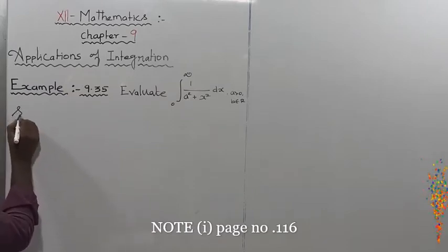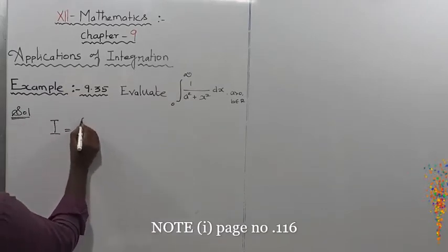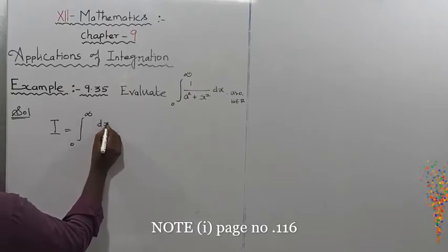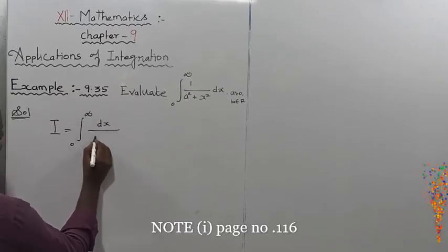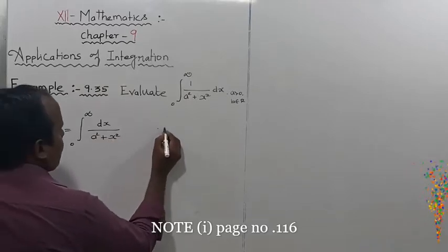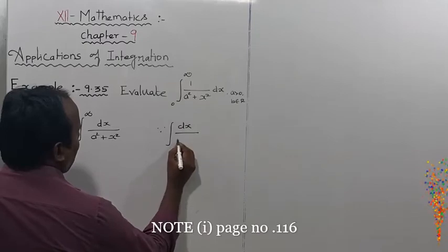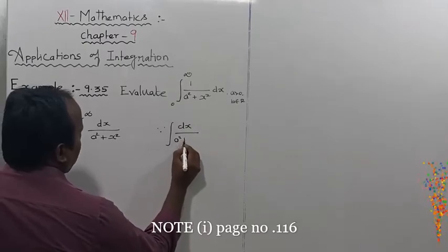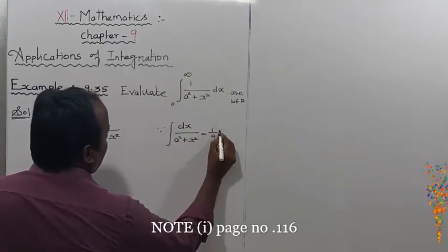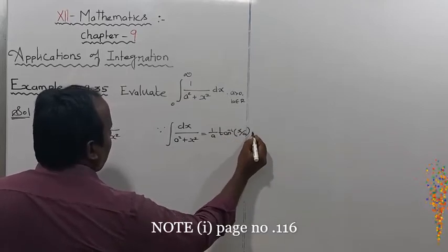Solution: The given integral value I is equal to the integral from 0 to infinity of dx divided by (a squared plus x squared). The formula for the integral of dx divided by (a squared plus x squared) is equal to 1 by a into tan inverse of x by a.